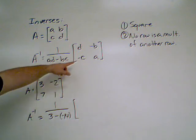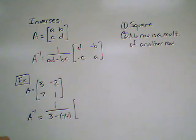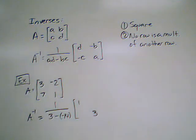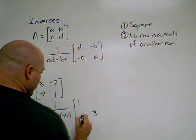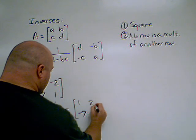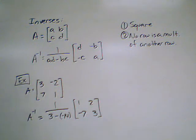Now we draw our other matrix here. D and A have switched places, so we now have 1 here and 3 here. And then B and C are in the same spot, but they are negative. So we have negative 7. This is what we had negative 2 to start with. We have positive 2 now.